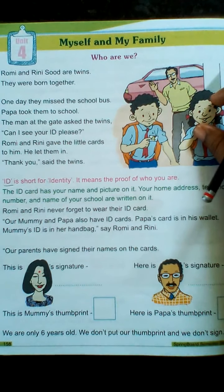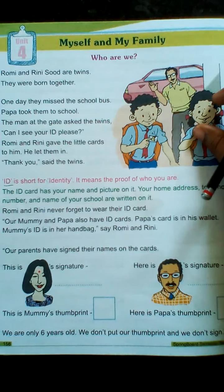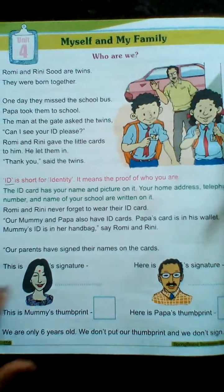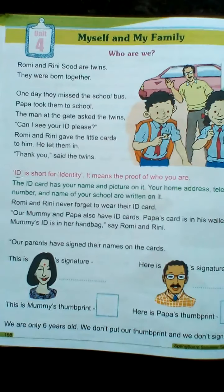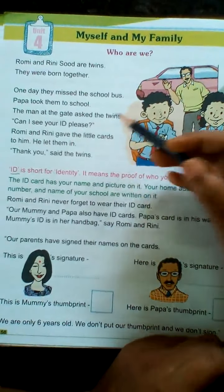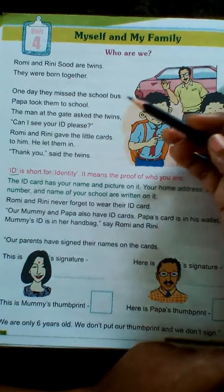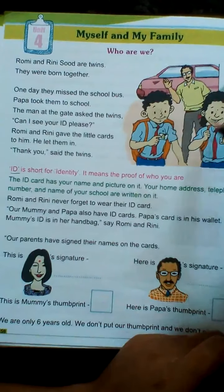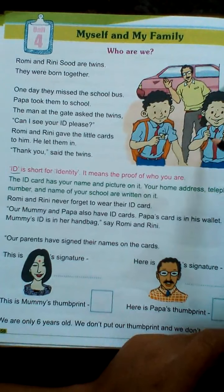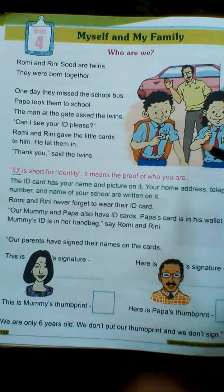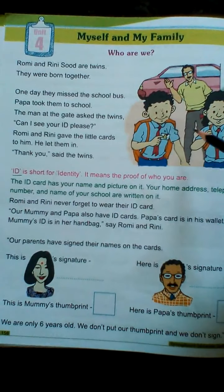Now let us see each kind in detail. First, we will discuss: who are we? See here, one paragraph is there. I will read for you. Romy and Rini Sooth are twins. They were born together — born at the same time and on the same day. One day, they missed the school bus.